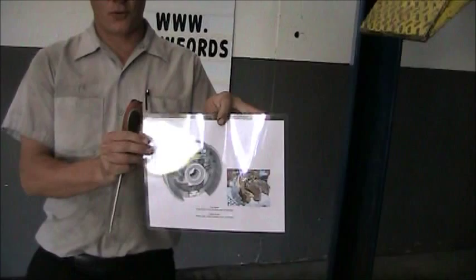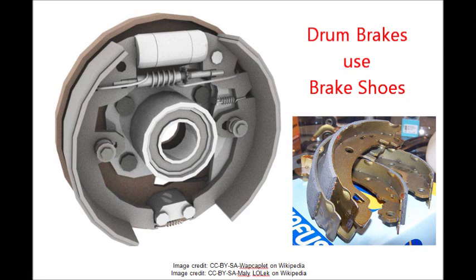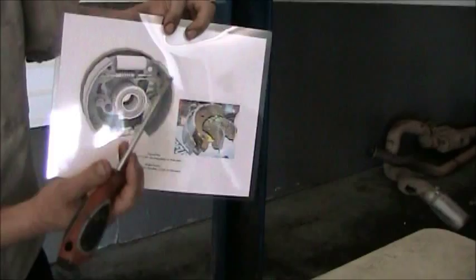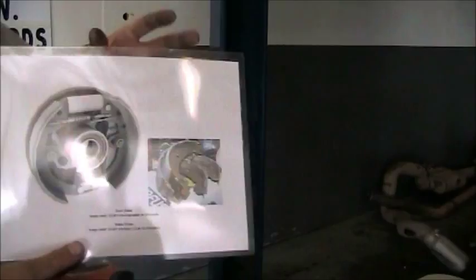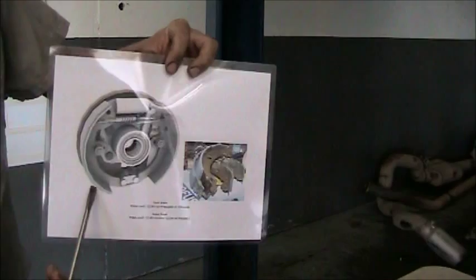There are two basic types of braking systems. We'll start with this one — a drum brake system. These are brake shoes. They are forced into the drum of the vehicle and apply a great force to produce heat through the friction material. Here's the steel, here's the friction material.